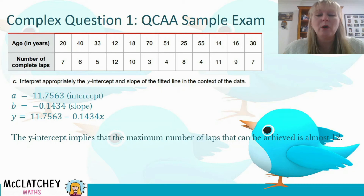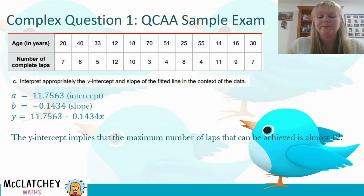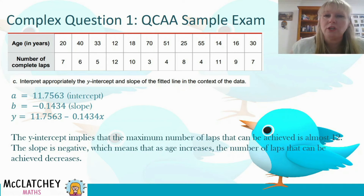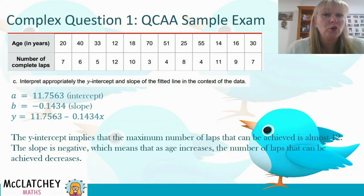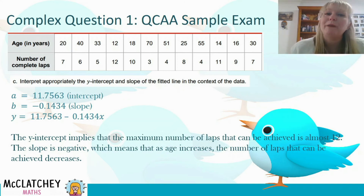Now obviously you may get somebody like Usain Bolt who could definitely do more than 12 laps in 30 minutes. In fact, you've got a 12 year old here who's done 12 laps, which is more than 11.7563. So you've got to remember that this is a model — it doesn't always match exactly to the data, it's just fitted to the data. Also, our slope is negative, so we can infer that as you get older or as age in years increases, the number of laps that you can achieve will decrease. That makes a lot of sense — I certainly can't do as many laps now as I could when I was 13 or 14.